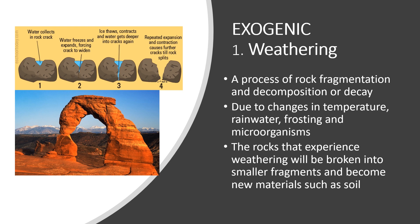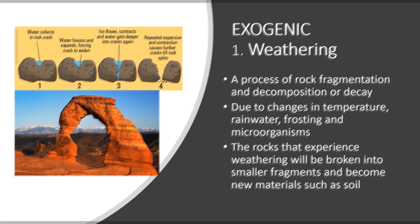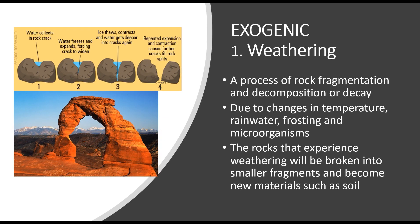Weathering occurs due to changes in temperature, rainwater, frosting, and microorganisms. Changes in temperature cause rock to expand and contract. As this happens over and over again, the structure of the rock weakens over time and it crumbles. Rainwater is naturally slightly acidic because carbon dioxide from the air dissolves in it.